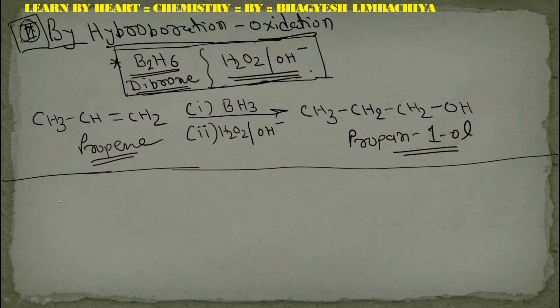Method number one is acid-catalyzed hydration. If we have propene and we use H2O with H+ (acid-catalyzed hydration), then from propene at that time we are getting propan-2-ol.